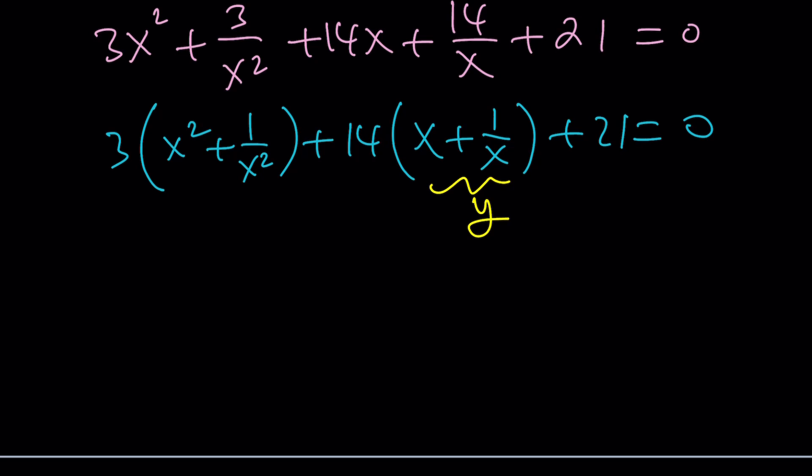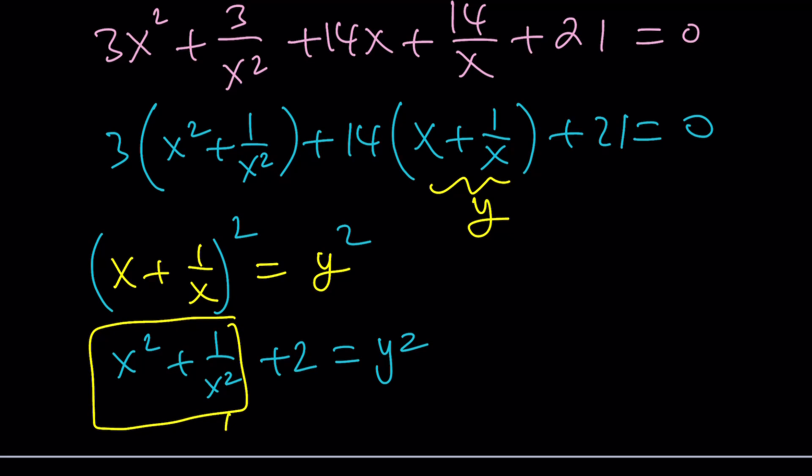And if that's equal to y, think about it. You can go ahead and square both sides and that's going to give you x squared plus 1 over x squared plus 2 equals y squared which means x squared plus 1 over x squared is going to be y squared minus 2.